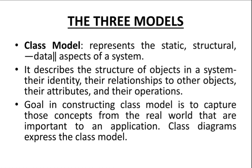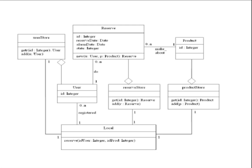The goal of constructing the class model is to capture class-related concepts, object-related concepts, attributes, and relationships between the objects. For example, this is the class diagram for the online store. When you are developing an online store, first you have to develop the class model. The class model contains the different classes for your software. So online store software contains classes — the first one being the User Store class. The UML notation to represent a class is a box with three compartments: the first contains the class name, the second contains attributes, and the third contains operations.